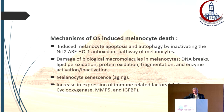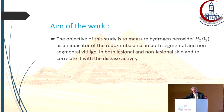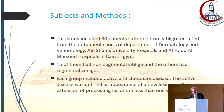There are several mechanisms by which oxidative stress induces melanocyte death, and many previous studies clarified such early adverse effects in non-segmental vitiligo, but its role in segmental vitiligo needs to be more investigated. The objective of this study is to measure hydrogen peroxide as an indicator of redox imbalance in both segmental and non-segmental vitiligo, in both lesional and non-lesional skin, and to correlate it with disease activity.